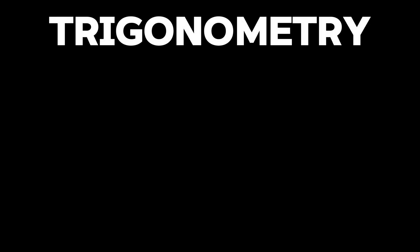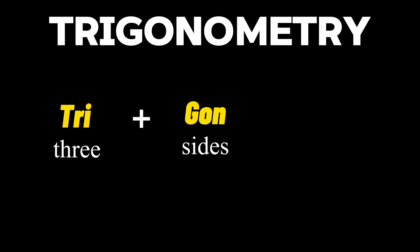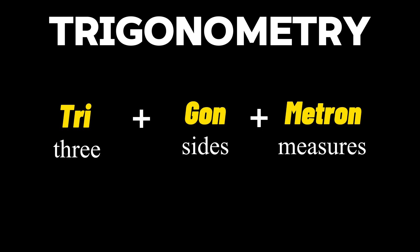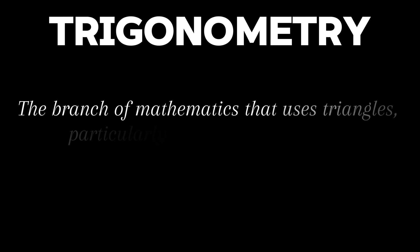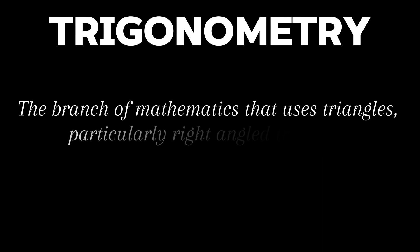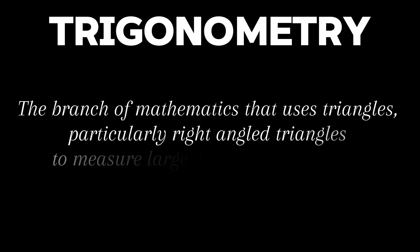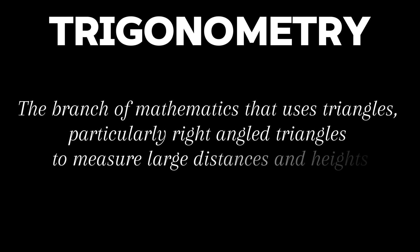Trigonometry is derived from the Greek word tri meaning three, gon meaning sides, and metron meaning measures. Trigonometry is the branch of mathematics that uses triangles, particularly right angle triangles, to help us find large distances and heights. It is the study of the relationship between the sides and angles of a triangle.